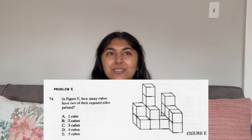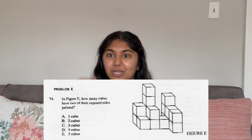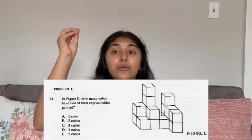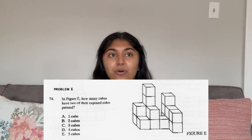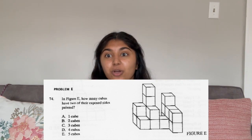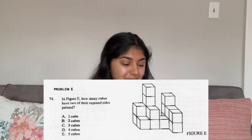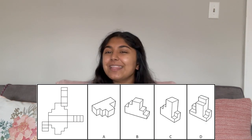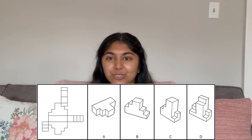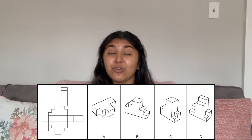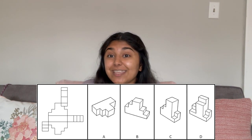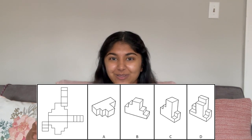Next is cube counting. They give you a 3D object with a ton of cubes, and you have to imagine how many sides would be painted if you threw paint onto it. They'll ask how many cubes are showing five sides, four sides, or three sides. Next is pattern folding — they give you an outline similar to the kind you'd cut out in elementary school to create a cube, and you have to say what the 3D image is going to look like. So those are the six sections of the PAT, or the perceptual ability test.